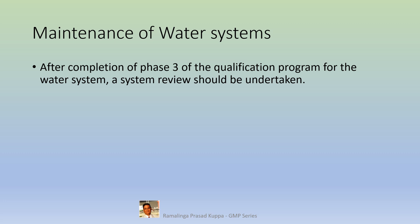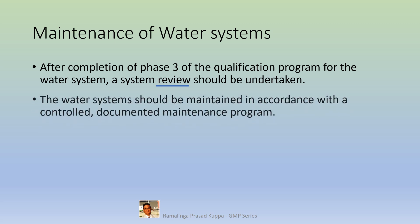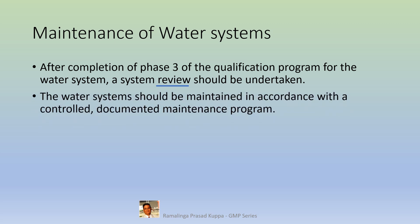a system review should be undertaken. This review process establishes the trends of performance of the system over each quarter and one year. The water system should be maintained in accordance with a controlled documented maintenance program.